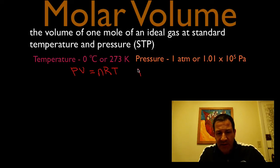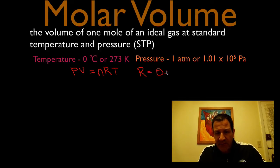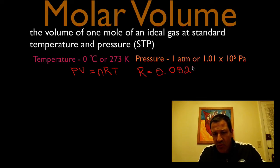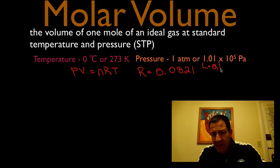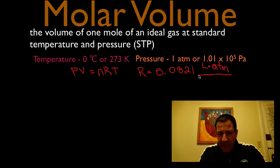We're going to use the ideal gas law, which is, of course, PV equals nRT. There are two common gas constants. I'll do this problem both ways, starting with the easier one — the 0.0821 gas constant. It does have units, and there are four of them: liter atmosphere over mole Kelvin.